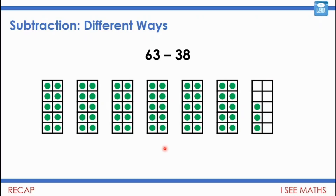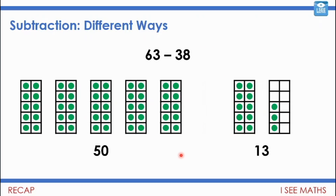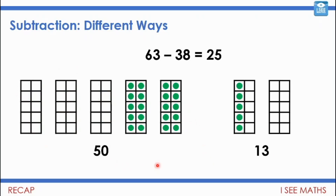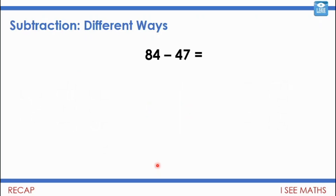The last method — it might be one you're most familiar with. For 63 subtract 38, we say I can't take the 8 away from the ones, so we break the 63 up into 50 and 13. Then I can take 8 away from this pile and that leaves me 5. Then I take 30 from the 50, which leaves 25. That's like the written method we often use.